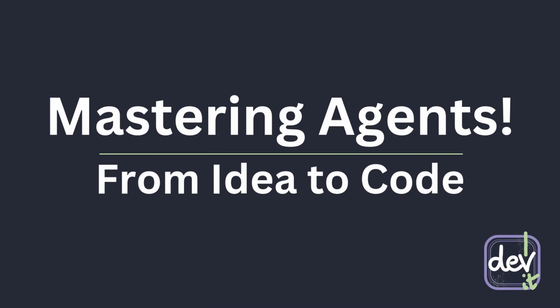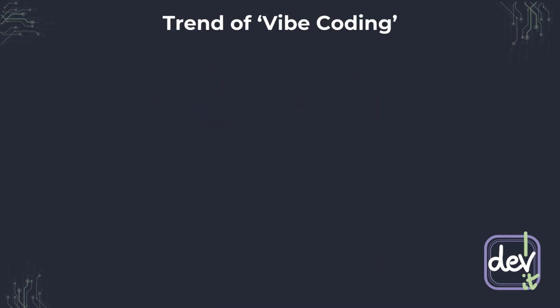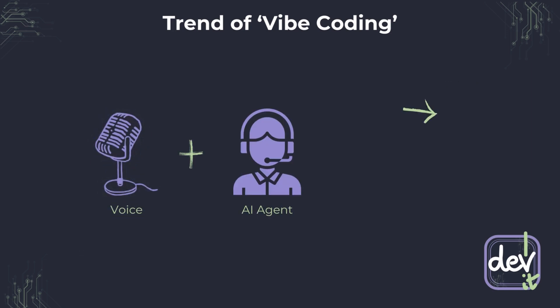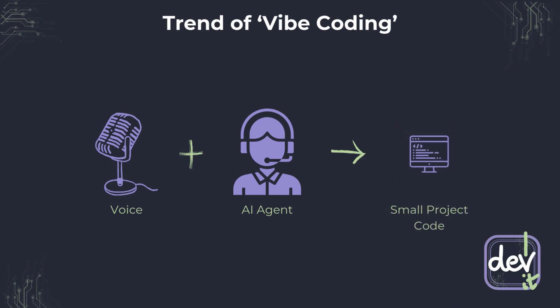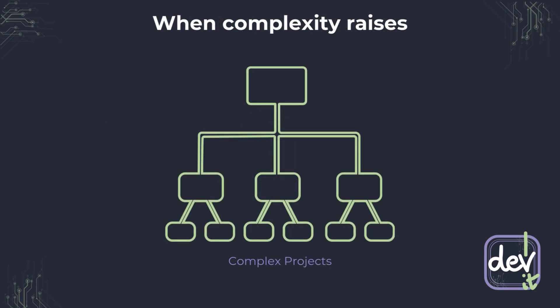There is a recent trend for so-called vibe coding, and it is great. You can easily build a project only by talking with an AI agent and see how it does most of the work. I'm also enjoying this type of coding for my small projects, and small is the keyword here. When the project is small, the developer can probably manage it alone. However, in larger projects, when the scope of the application grows, one person is not able to deliver it effectively — there are just too many details.